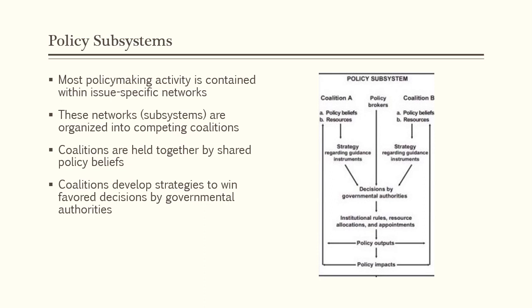Within those subsystems, you have policy actors — people who are actively trying to shape government policy on that particular issue area. Policy actors can be members of interest groups, government officials, or concerned citizens who show up to public hearings on particular issues. The Advocacy Coalition Framework asserts that the actions of policy actors within subsystems are organized by coalitional behavior. People who are active in a particular policy area generally tend to congregate into a small number of coalitions, usually only two or three, and these coalitions compete with one another to try to get their preferred policies enacted by government.